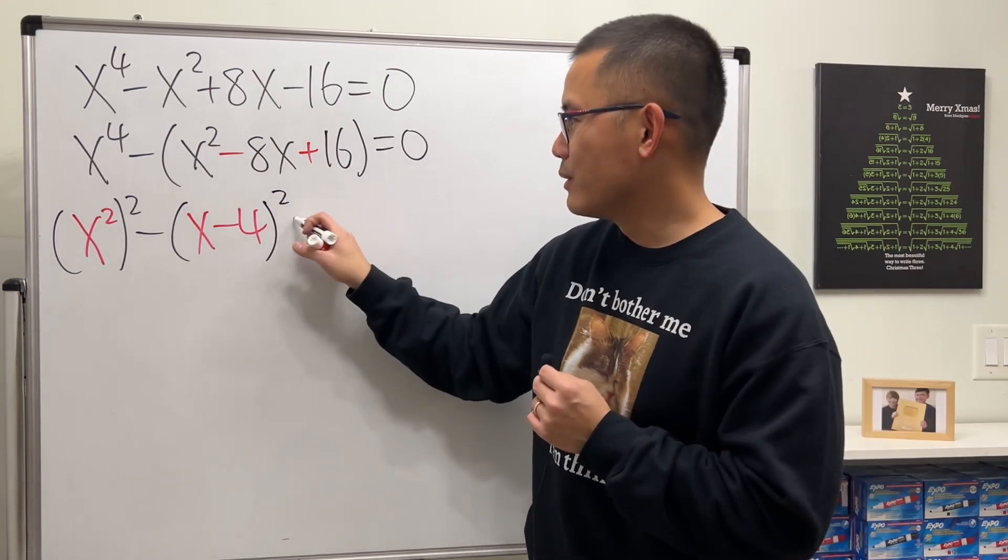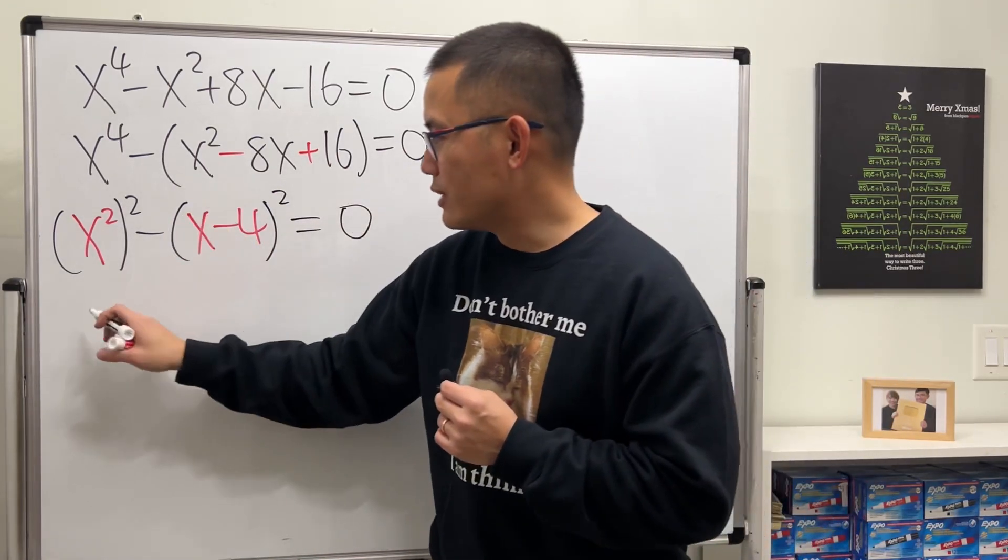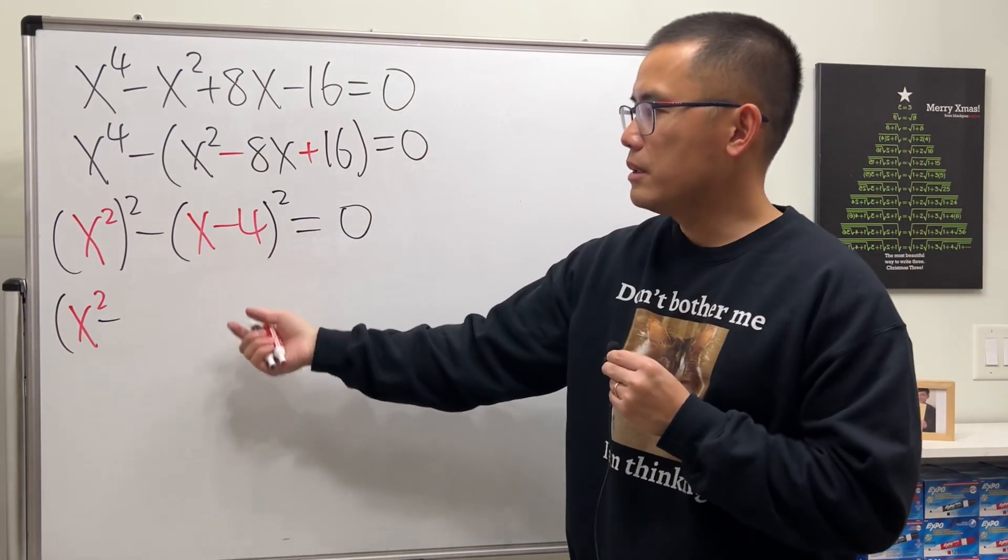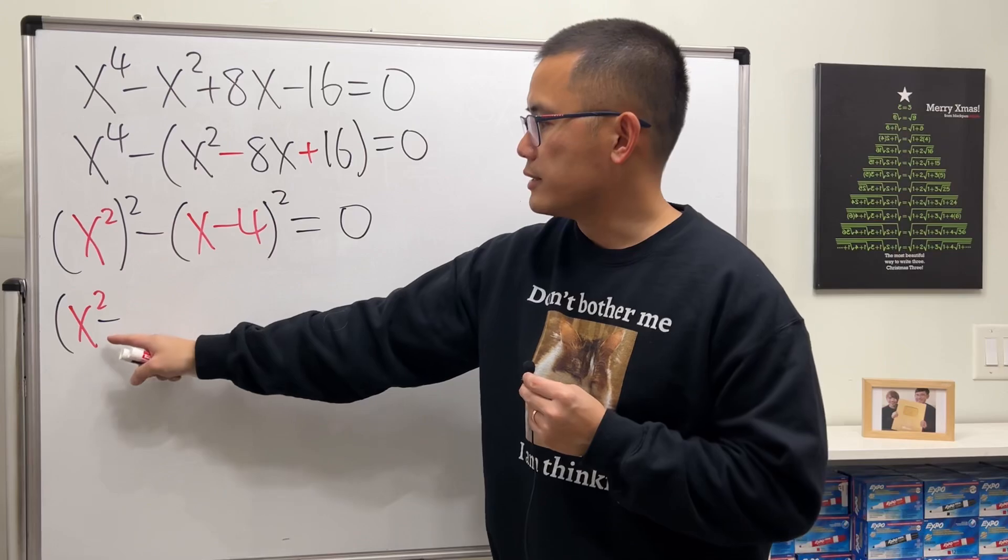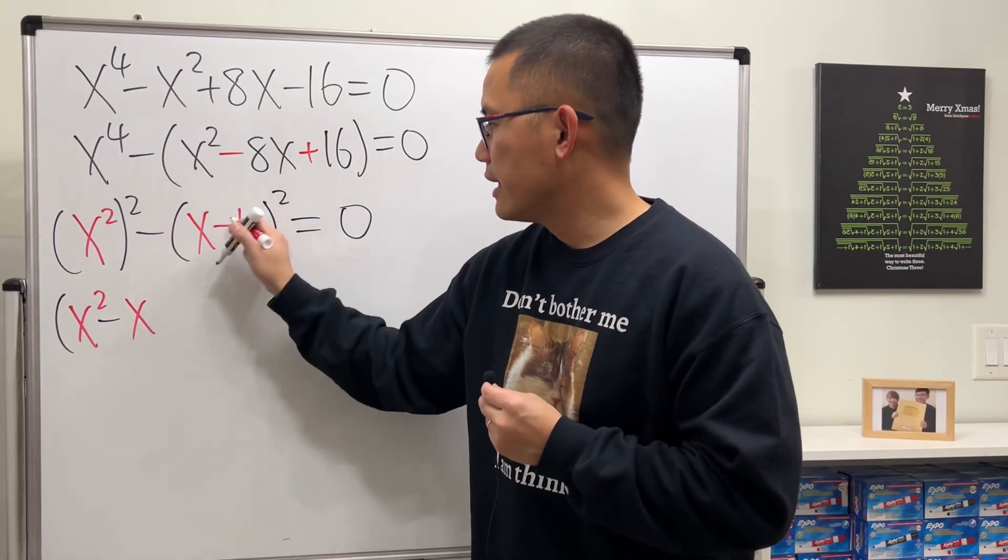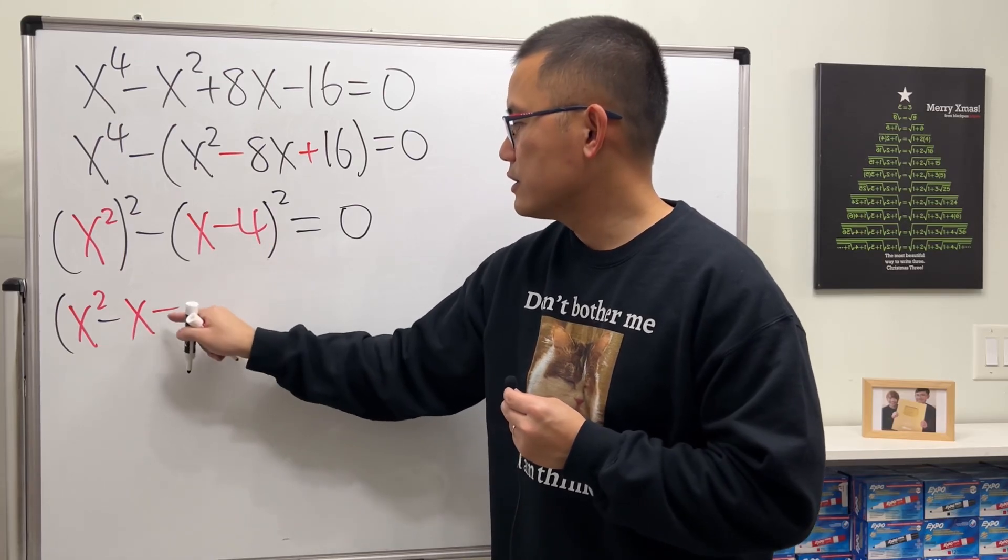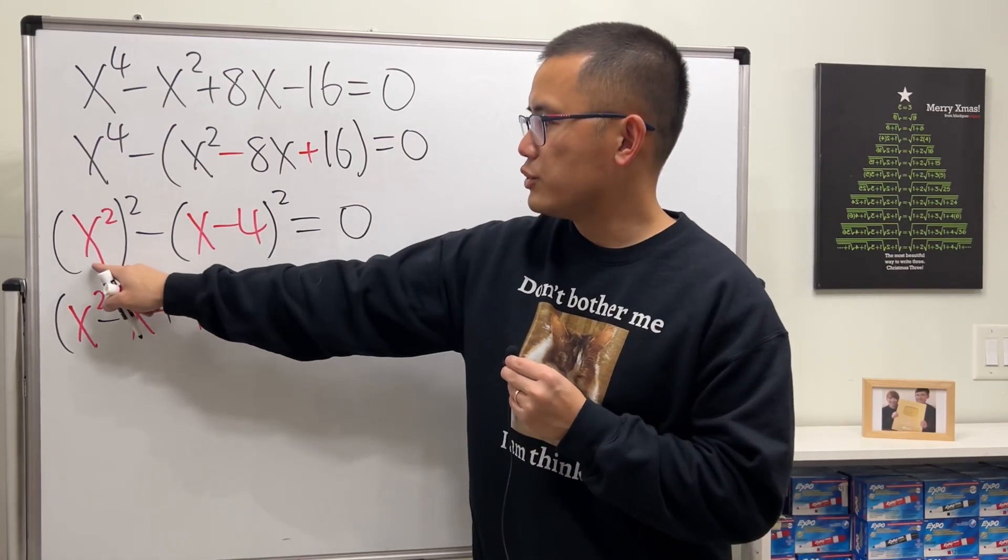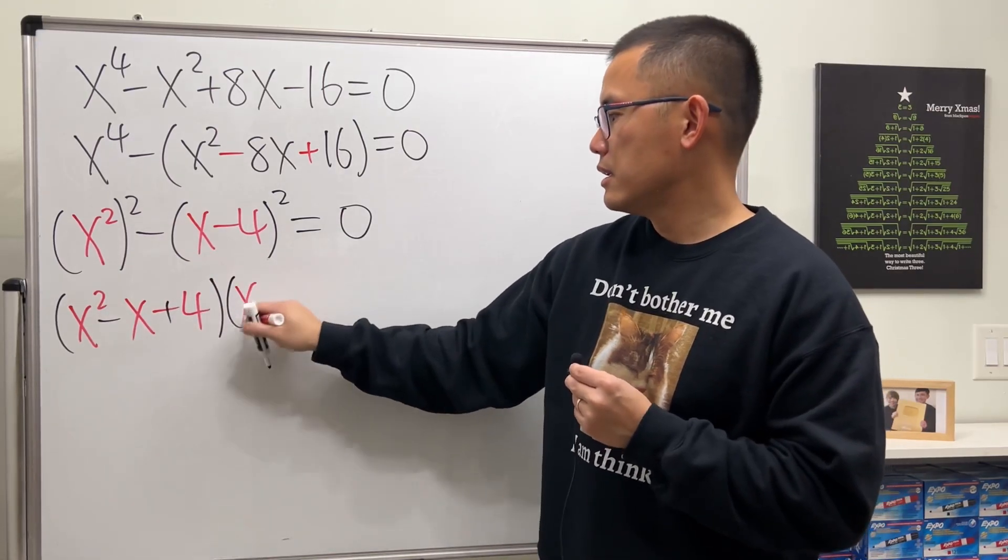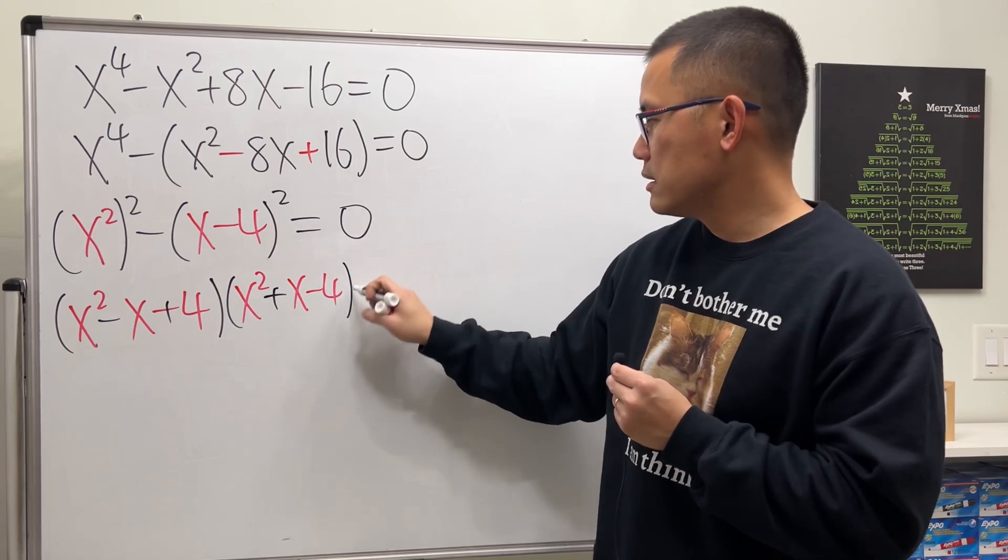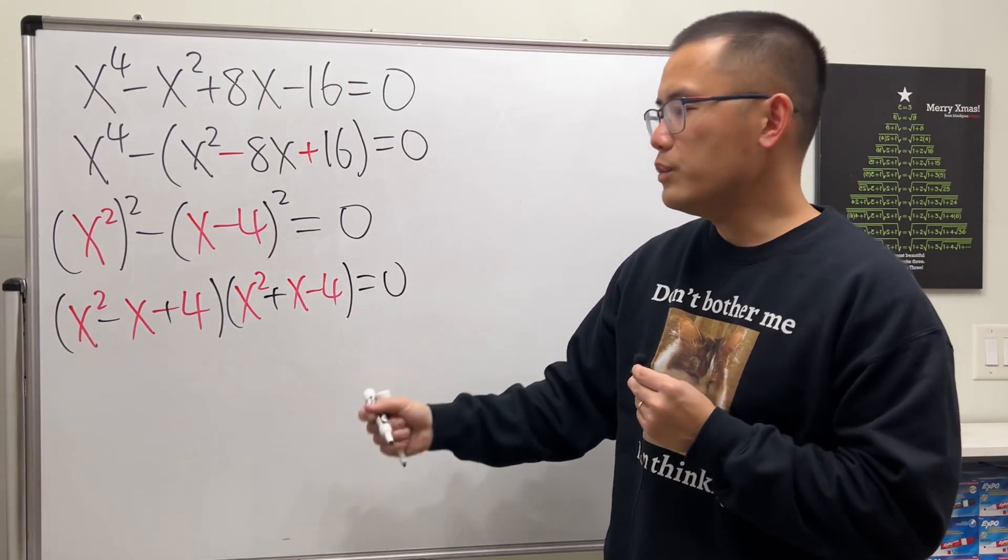Okay, now we can just go ahead and factor it with difference of two squares. So this right here becomes x squared minus this quantity, but it has two terms so we distribute and we will have negative x and then negative negative, so we will have a positive 4. And then the other factor is just this plus that, and that's equal to zero. Then we can just put both of them equal to zero individually and then solve them individually.